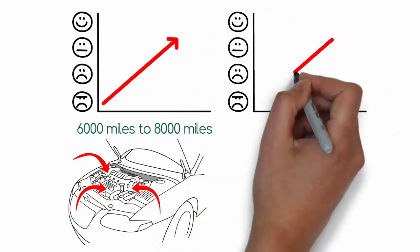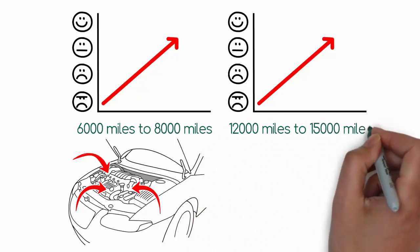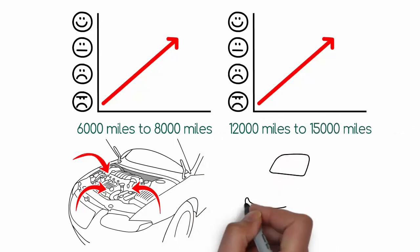Full synthetic change intervals range 12,000 miles to 15,000 miles, depending on the car's driving in the city or freeway.